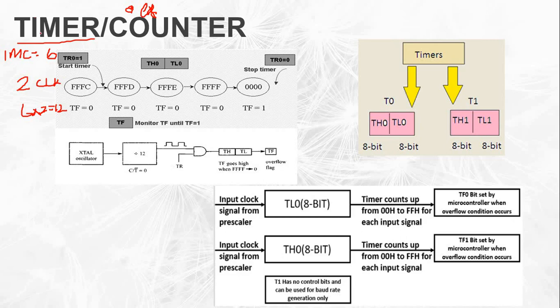There are 6 increments, meaning the timer frequency is the oscillator frequency divided by 12. This is the fundamental concept of the timer.